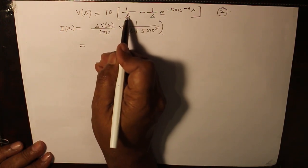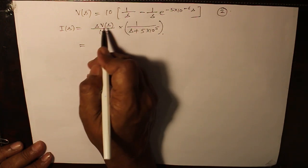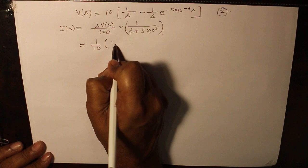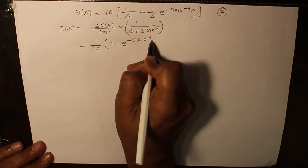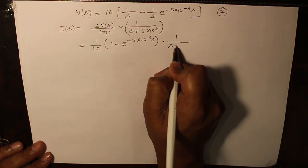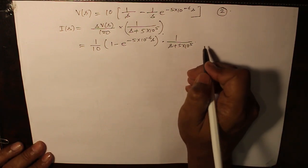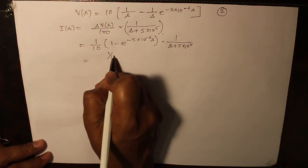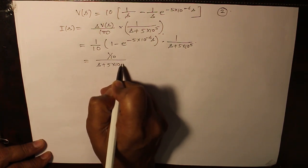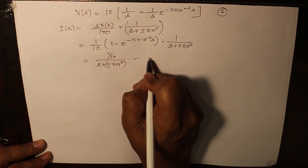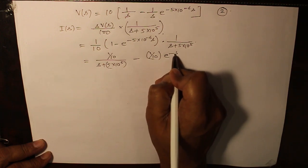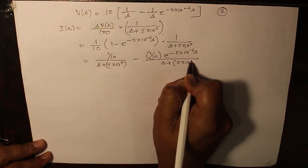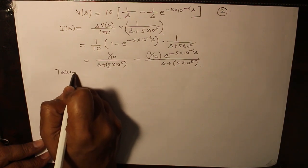Now, if we multiply s onto it, as we see s is in the denominator on both sides. So, s*V(s) over 100 will simply become 1 over 10 times (1 minus e raised to the power minus 5*10^-6*s) times 1 over (s plus 5*10^5). Which can be again further split into two parts, so that the Laplace inverse would be easy for you to comprehend. First one, 1 over 10 divided by s plus 5*10^5. And second one, 1 over 10 e raised to the power of minus 5*10^-6*s over (s plus 5*10^5).